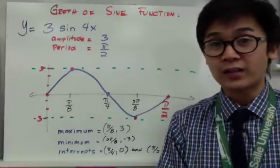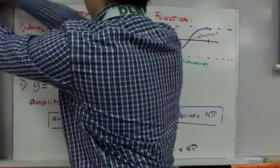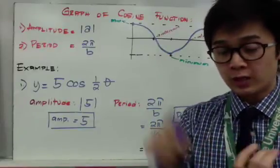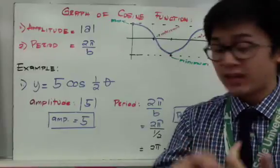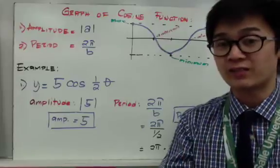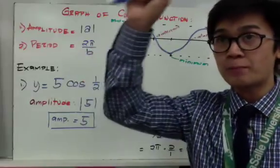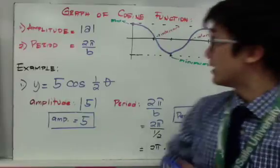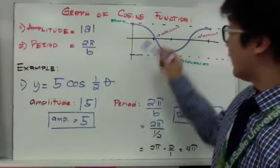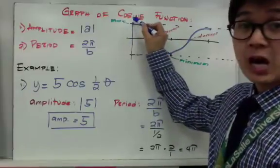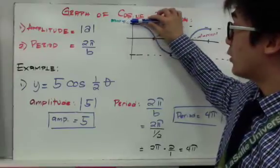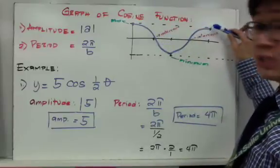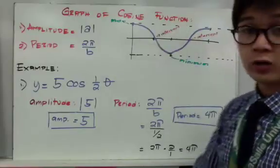Now let's start graphing a cosine function. Graphing a cosine function is similar to graphing a sine function — you still need your amplitude, your period, and your four partitions, and the formulas are the same. The only difference is the behavior: instead of starting at (0, 0) and going up, a cosine function starts at the very top — at the amplitude — and then goes down.